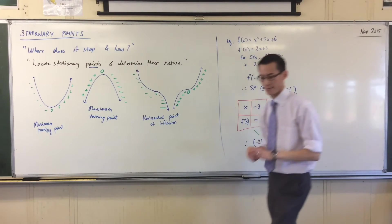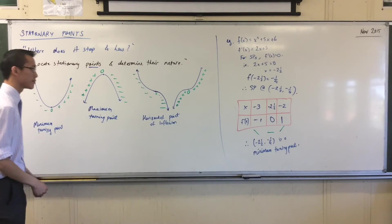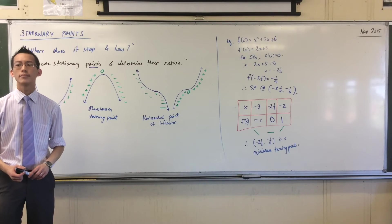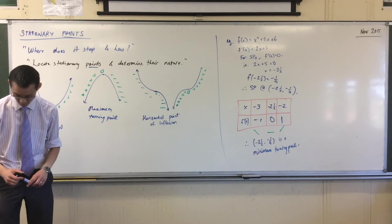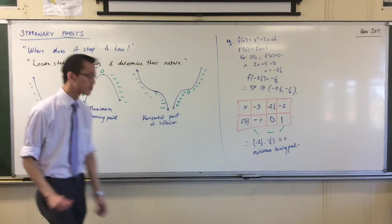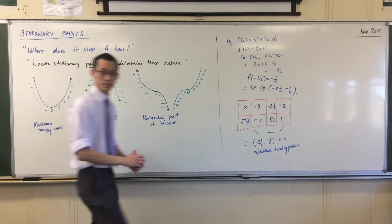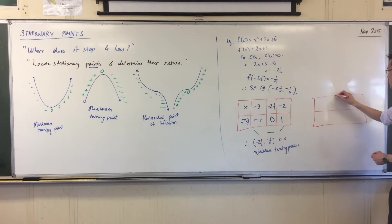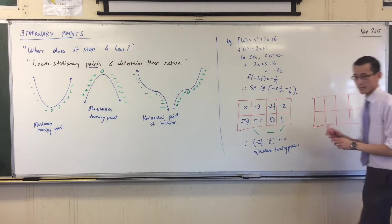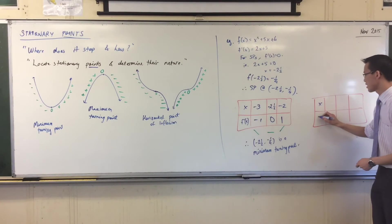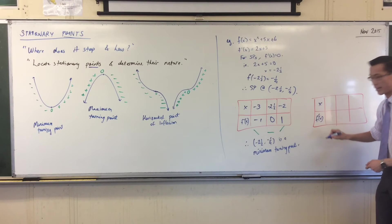Question: I've seen people do like this stuff where, you know, they sub in like three into your f dash of x and they realize it's like a negative, then they just put a negative in the box. And they realize that the f of minus two is a positive, so there's a plus in the box. Would you prefer us to write a value in there, or would you prefer us to write like a symbol just to get the change?